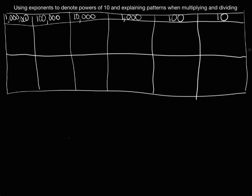We're going to use two rows and start by talking about factors of 10. When I look at 10, I can write it as 10 times 1 — there's one factor of 10. For 100, written only with factors of 10, it's 10 times 10 — two factors of 10. For 1,000, it's 10 times 10 times 10, and there are three factors of 10 — matching the three zeros in 1,000.